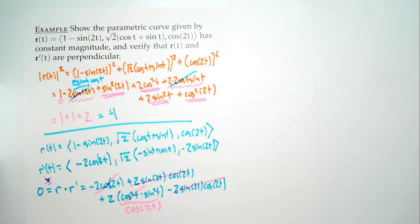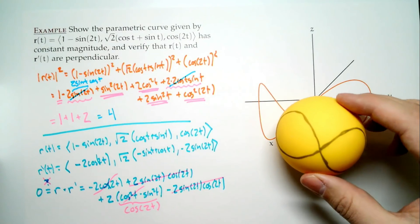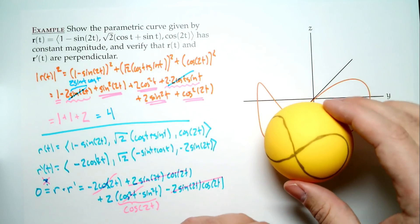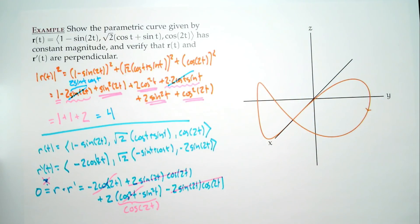This curve has the properties we claimed: constant magnitude and R perpendicular to R'. If you plot it, you get something that looks like an infinity symbol drawn on a sphere — the shape depends on your viewing angle.